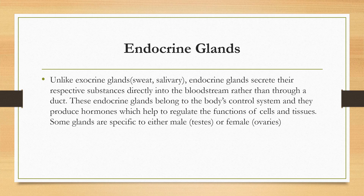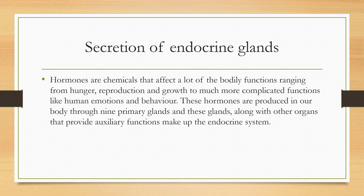Endocrine glands, unlike exocrine glands such as sweat and salivary glands, secrete their respective substances — hormones — directly into the bloodstream rather than through a duct. These endocrine glands belong to the body's control system and produce hormones which help regulate the functions of cells and tissues. Some glands are specific to either male — the testis — or female — the ovaries. The hormones secreted are chemicals that affect many bodily functions ranging from hunger and reproduction to growth and even human emotions and behavior. Hormones are produced through nine primary glands, which along with other organs providing auxiliary functions make up the endocrine system.